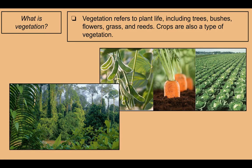What is vegetation? Vegetation refers to plant life, including trees, bushes, flowers, grass, and reeds. Crops are also a type of vegetation. On the left is some very lush greenery — that would be vegetation. On the right are some examples of crops, which again are a type of vegetation.